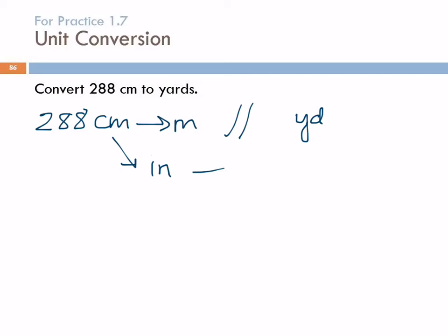So if we went to inches, could we go from inches to yards? We could. How many inches are in a yard? 36. 36 inches equals one yard. And we already talked about inches to centimeters. We know that one inch equals 2.54 centimeters.